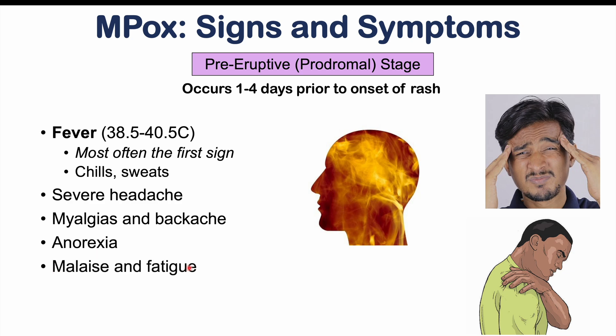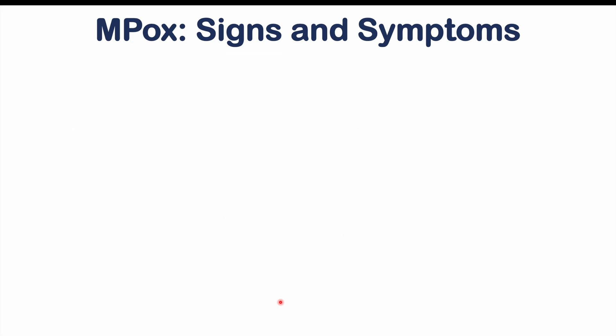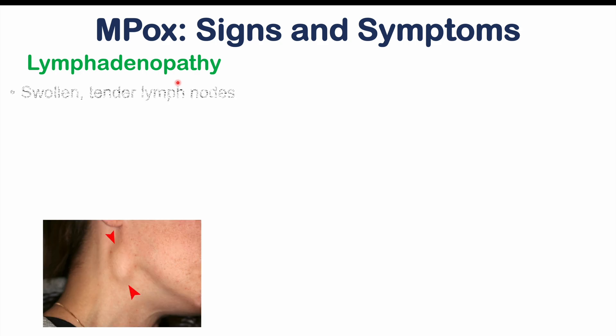Patients can also have malaise and fatigue, pharyngitis or sore throat, dyspnea or shortness of breath, and a cough — all very vague and nonspecific flu-like symptoms. Importantly, patients can have lymphadenopathy, because the virus enters and multiplies in the lymph nodes. Lymphadenopathy — swollen, tender lymph nodes — occurs within two to three days of fever onset.